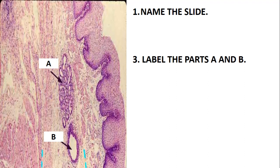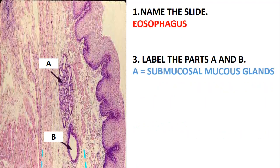Let's quickly move on and look at this next slide. You can see the epithelium, which is just stratified squamous epithelium — non-keratinized. Such an epithelium you can find in the vagina and also in the esophagus. But looking at the glands which are present, because of those glands this slide is likely to be the esophagus.